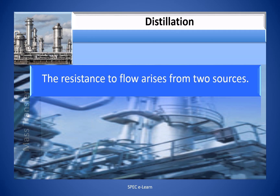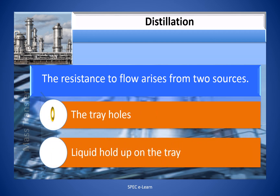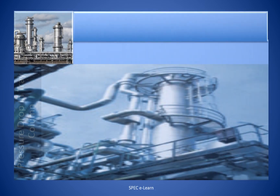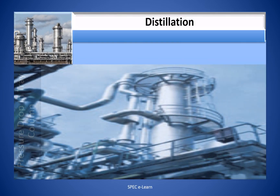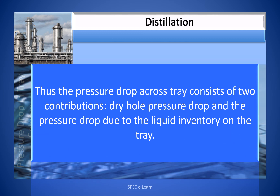The resistance to flow arises from two sources: A, the tray holes, and B, the liquid holdup on the tray. Thus, the pressure drop across the tray consists of two contributors: dry hole pressure drop and the pressure drop due to the liquid inventory on the tray.